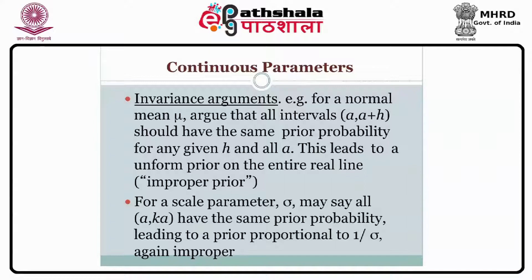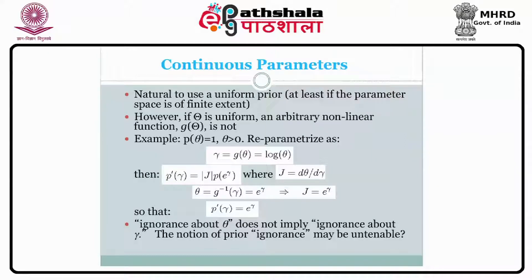There are some problems with the uniform prior even if you assign equal probability at each value of the parameter theta. However, if theta is uniform, an arbitrary non-linear function g(theta) is not. To illustrate: if you take pi(theta) = 1 for theta positive, and you are interested in some function of theta like gamma = log(theta), it is natural that if you have no idea about theta, you also have no idea about gamma. If you assign uniform prior for theta, you must also assign uniform prior for gamma. But through the Jacobian, the new prior for gamma turns out to be e^gamma — so it varies over different values of gamma and is not uniform.